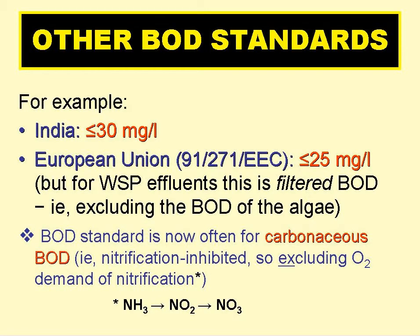Other examples of BOD standards include no more than 30 milligrams per litre in India, and no more than 25 milligrams per litre in the European Union. But for waste stabilisation pond effluents in the EU, this is no more than 25 milligrams filtered BOD per litre — i.e. excluding the BOD due to the algae in pond effluents. Generally, BOD standards are now set for just carbonaceous BOD, sometimes called nitrification-inhibited BOD, as a chemical is added to the BOD dilution water to stop the growth, and hence the oxygen demand, of nitrifying bacteria.